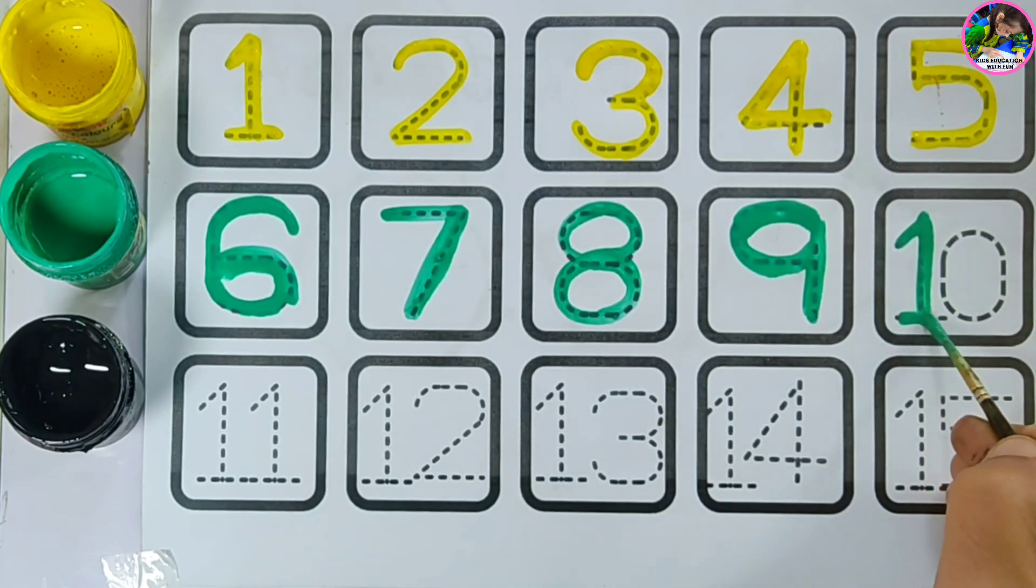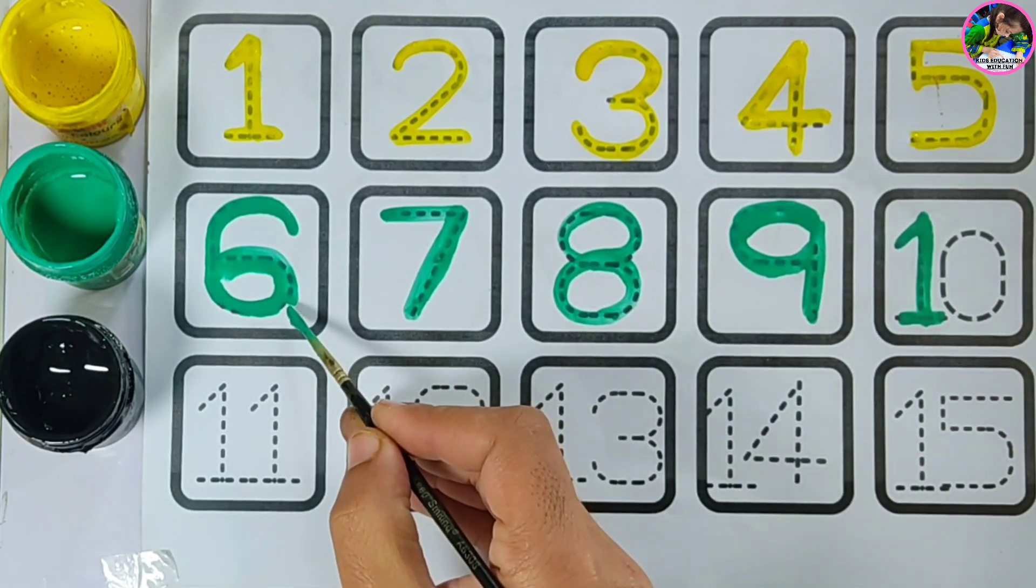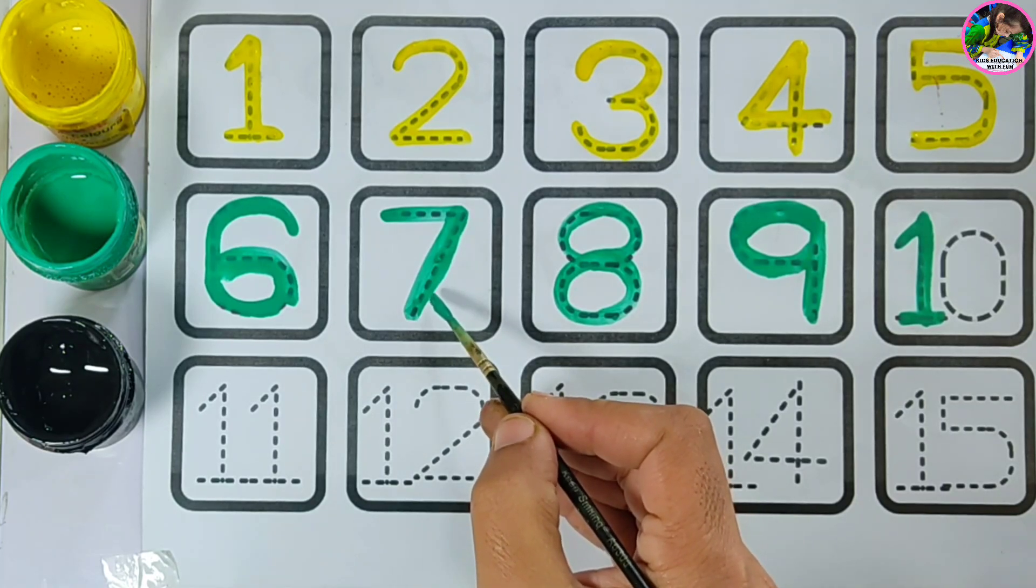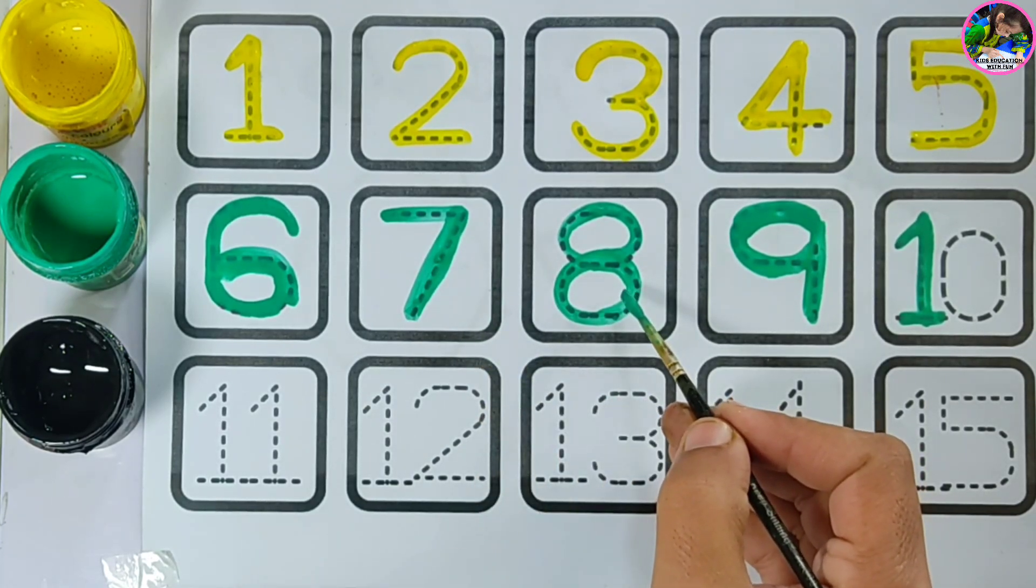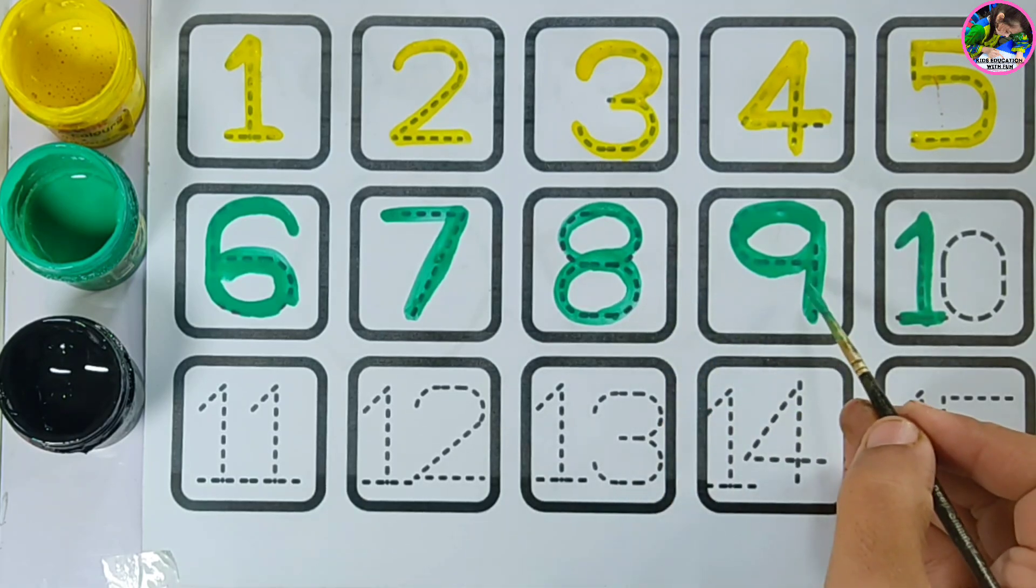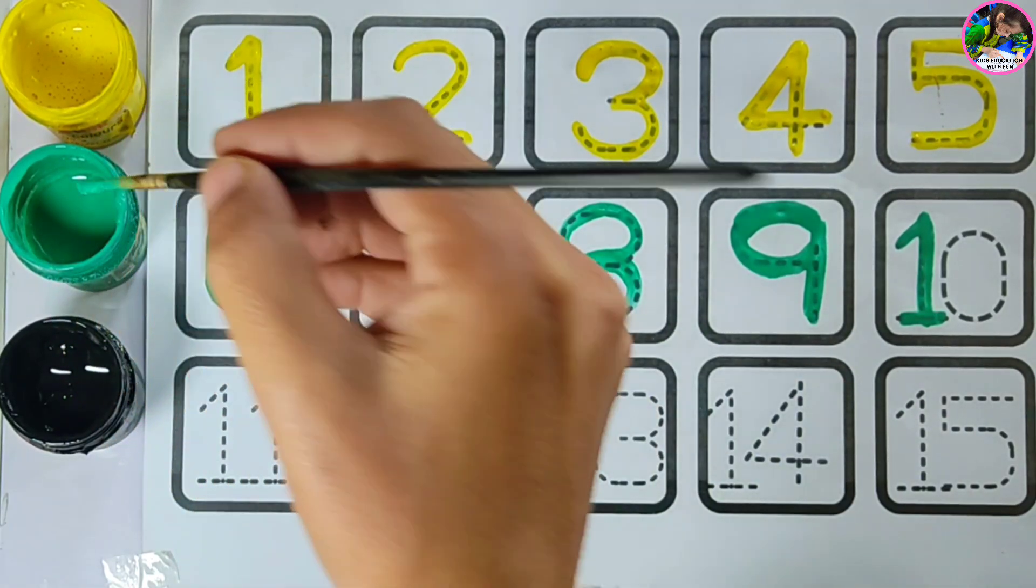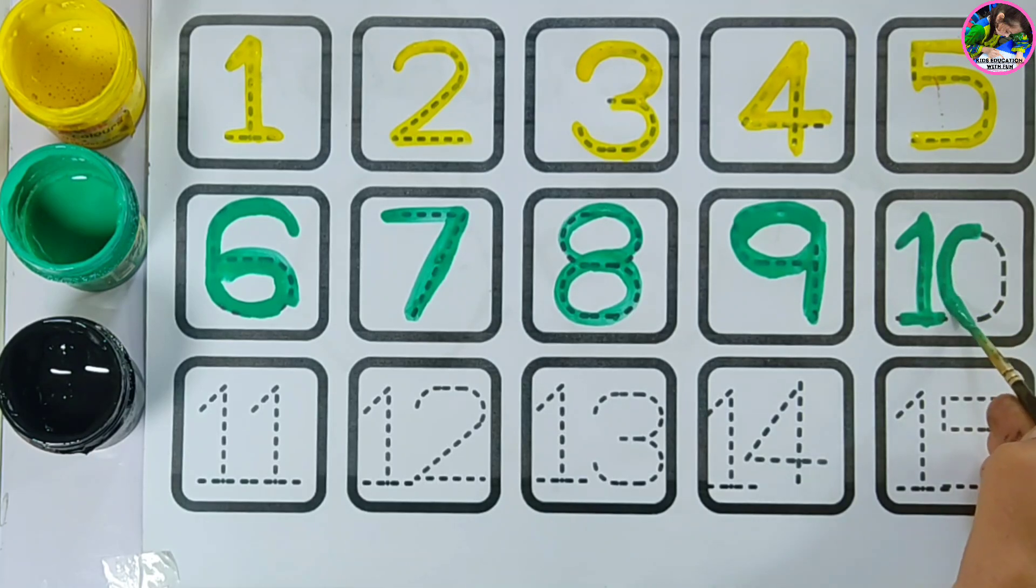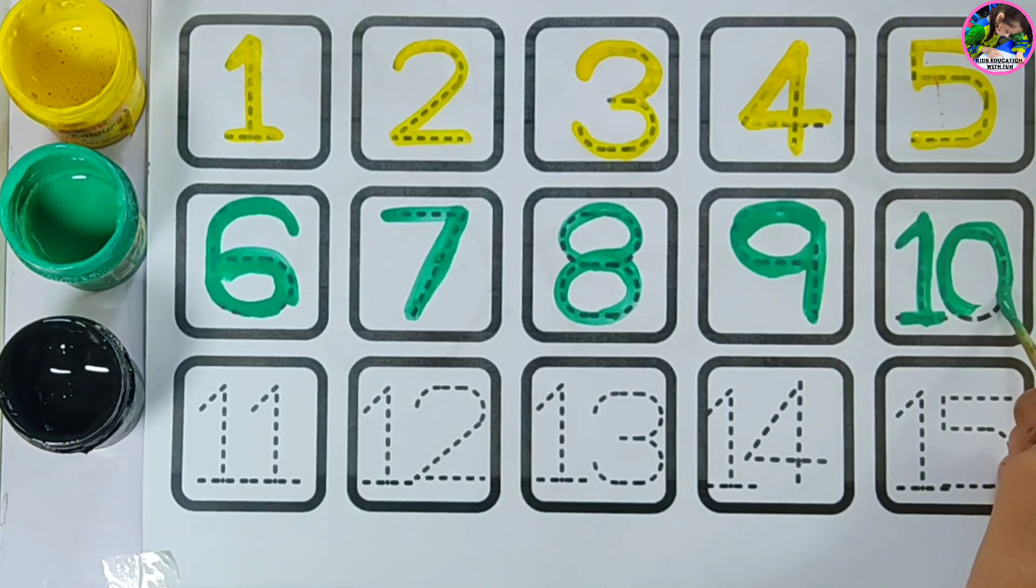Ten. S-I-X, six. S-E-V-E-N, seven. E-I-G-H-T, eight. N-I-N-E, nine. T-E-N, ten. Number ten.